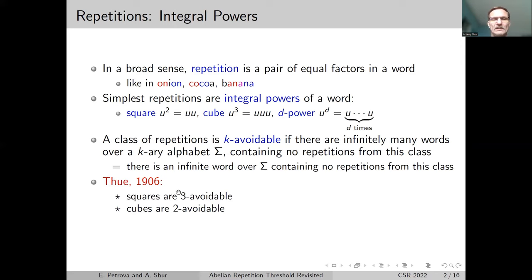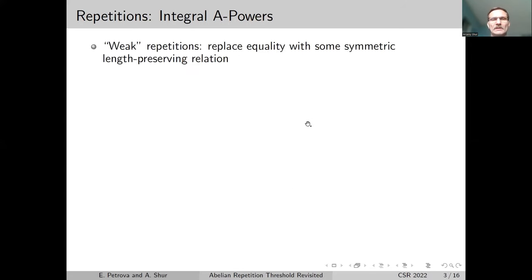Over three letters, you have infinitely many words which contain no squares. It's easy to see that squares are not two-avoidable, and so this gives us a complete characterization of avoidability of integral powers. Along with usual repetitions when you consider equal factors, there are a lot of generalized weak repetitions when one replaces equality with some relation which is symmetric and length-preserving.